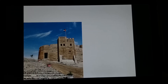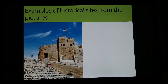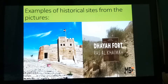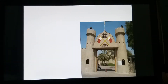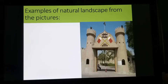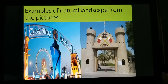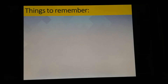That location is Fujairah Fort — an example of a historical site. Another example is Daya Fort in Ras Al Khaimah. The Ajman Museum is an example of a historical site as well. Global Village is an example of a modern attraction. These are the things you must remember.